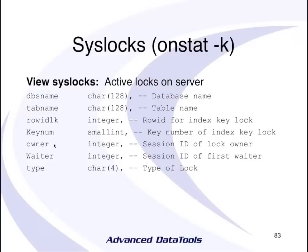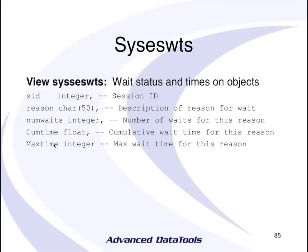SysLocks is a view I don't use a lot because it takes significant I/O — it's made up of six underlying tables. ONSTAT -K gets you the raw data; SysLocks tries to give it in a friendlier format but on a large system with a million locks in your lock table, you're reading a million rows. SysSessionWaits tells you who's waiting on what, though you can get this from SysSessions too, which is where I prefer to get it.